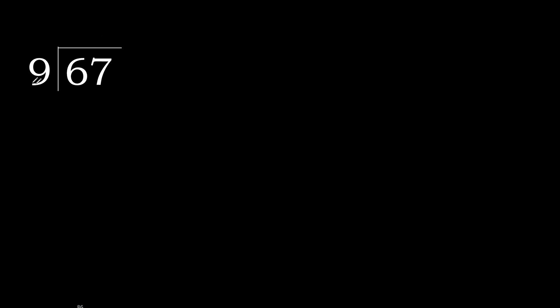67 divided by 9. 6 is less, therefore next. 67 is not less, therefore with 67. 9 multiplied by which number is nearest to 67 but not greater?